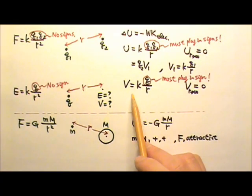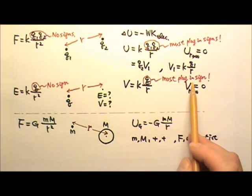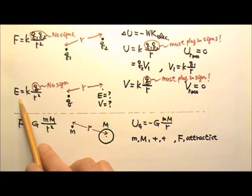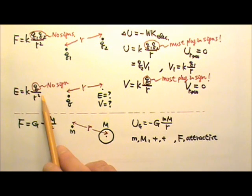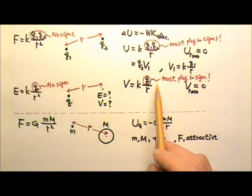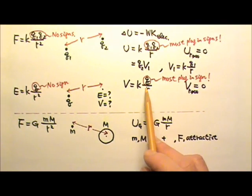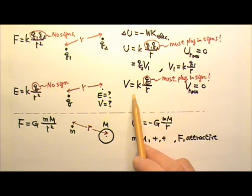Because electric potential is a scalar, it is important for us to plug in the sign for the charge. Unlike the vector field, I don't plug in the sign here. I only use this equation to find the magnitude of the field. This equation also tells us that a positive charge produces positive electric potential, while a negative charge produces a negative electric potential.